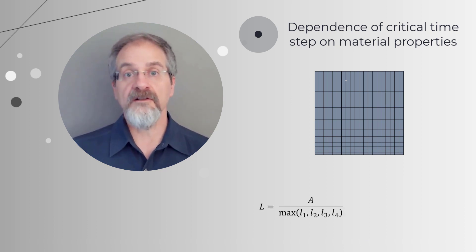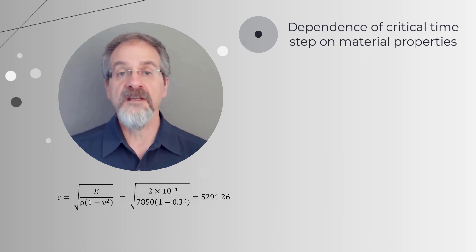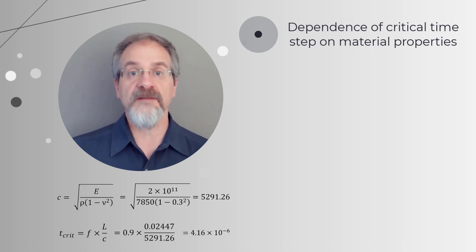The steel plate is meshed non-uniformly with rectangular shell elements of varying sizes. The area and the longest side of the smallest element are used to calculate the characteristic length for this mesh. Using the material properties of steel, we calculate the speed of sound c in the steel, and finally we calculate the critical time step.